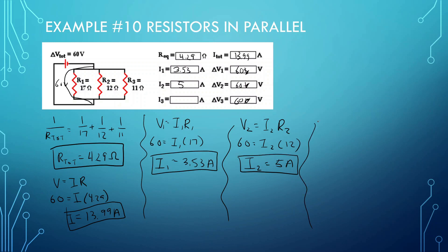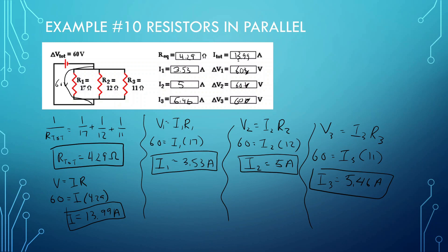For V3: 60 equals I3 times R3, where R3 equals 11. So I3 equals 60 divided by 11, giving 5.45 or 5.46 amps. The one with the least resistance has the most current, and if you add all of these up, they equal the total current, I total.